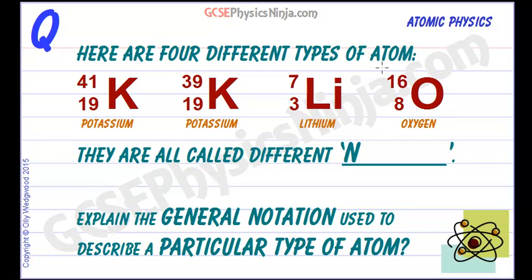Here are four different types of atom. Remember that the larger number on each of these symbols refers to the nucleon number — that's the atomic mass, and it's telling us how many particles there are in the nucleus, both protons added together with neutrons.